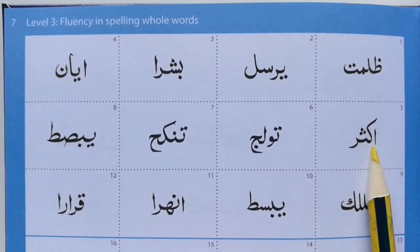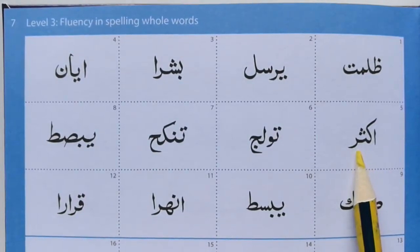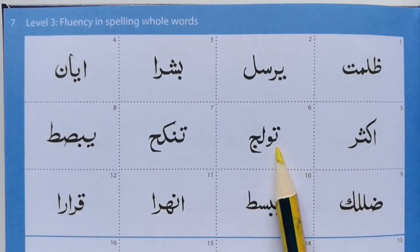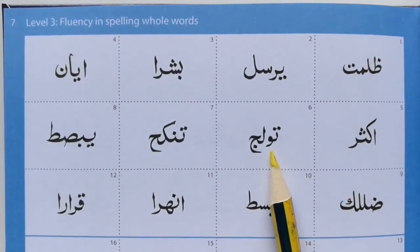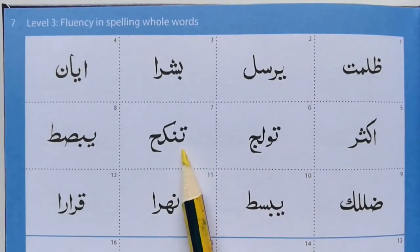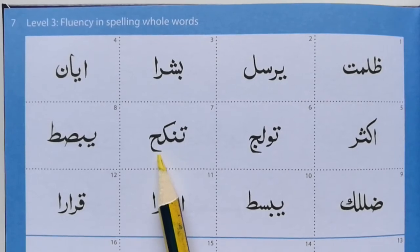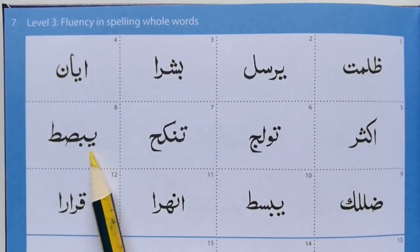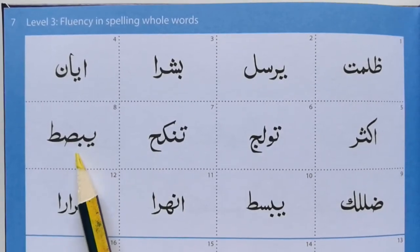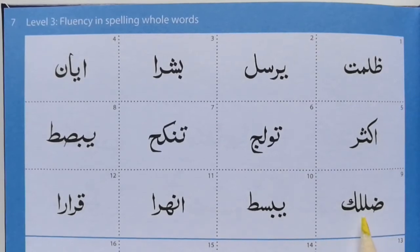Alif, Kaf, Tha, Ra, Ta. Waaw, Lam, Jim, Ta, Nun. Kaf, Haa, Ya, Ba, Saad, Ta. Taad, Laam, Laam, Kaaf.